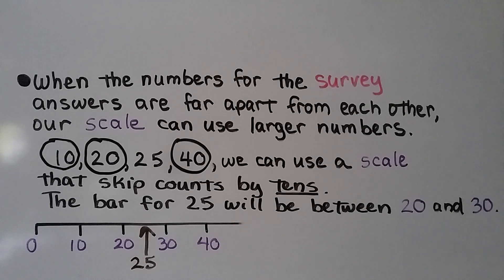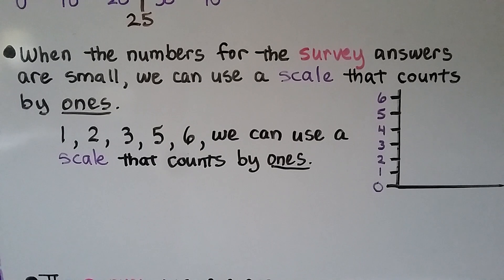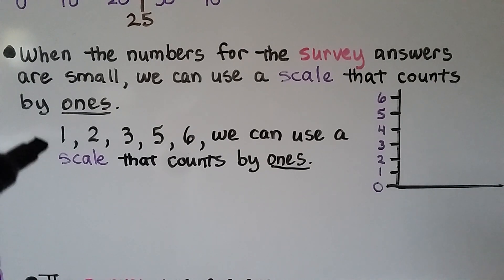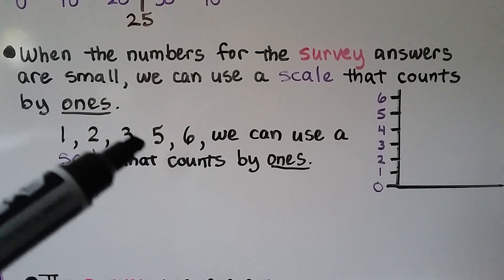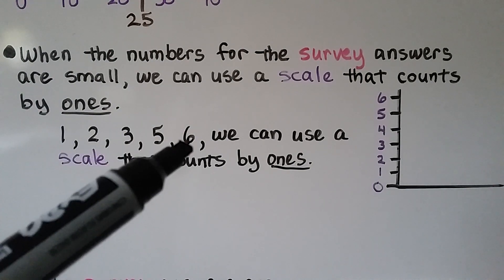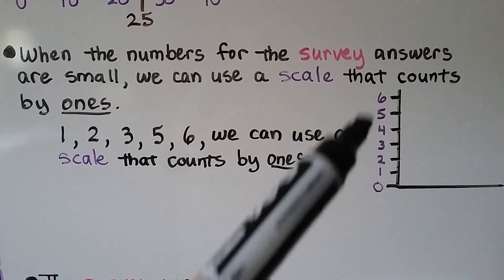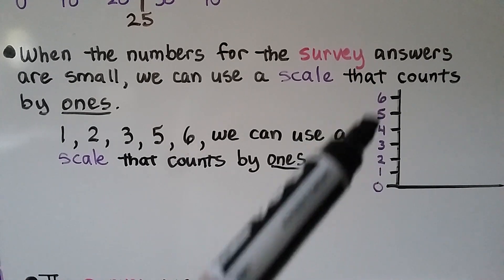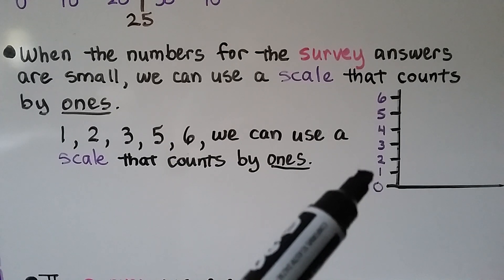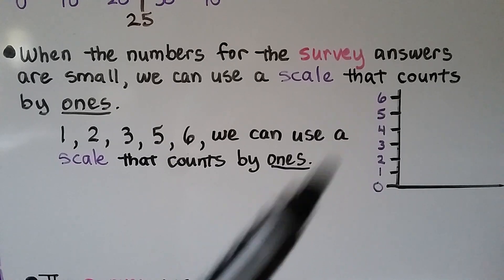Some survey answers can be very large — like in the hundreds of thousands, even. When the numbers for the survey answers are small, we can use a scale that counts by ones. If our answers are 1, 2, 3, 5, and 6, we can use a scale that counts by ones: 0, 1, 2, 3, 4, 5, 6.